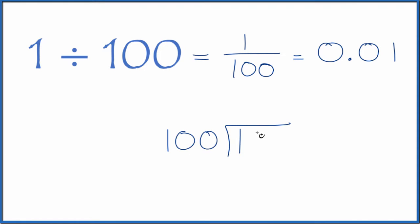100 doesn't go into 1, so we add a 0 here. Call this 10, and put a 0 with a decimal point up here. But 100 doesn't go into 10, so let's put another 0. Then we'll put a 0 here after the decimal point. Now 1 times 100 is 100. So when we subtract, we get no remainder.